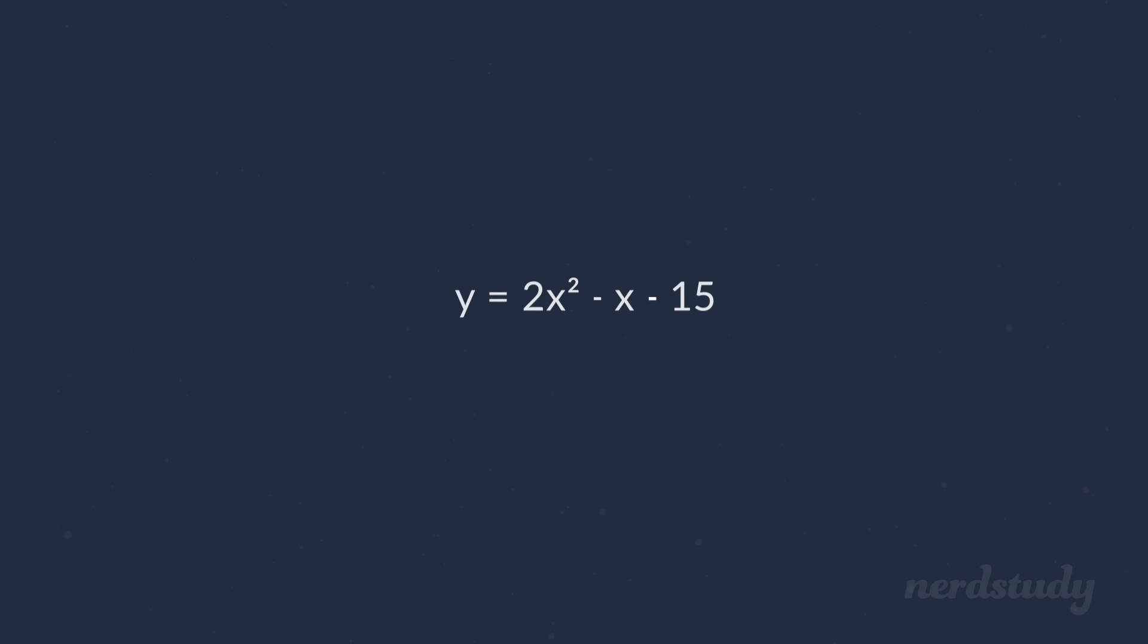Here we've got y equals 2x squared minus x minus 15. Now assuming that this can be factored, let's try out what we just learned. So first of all, we multiply A and C, which are 2 and negative 15, in this case, to get negative 30.